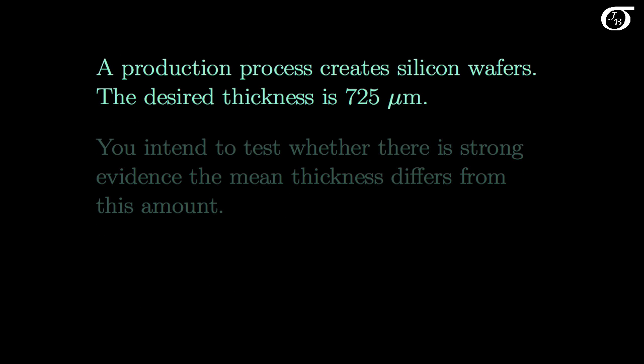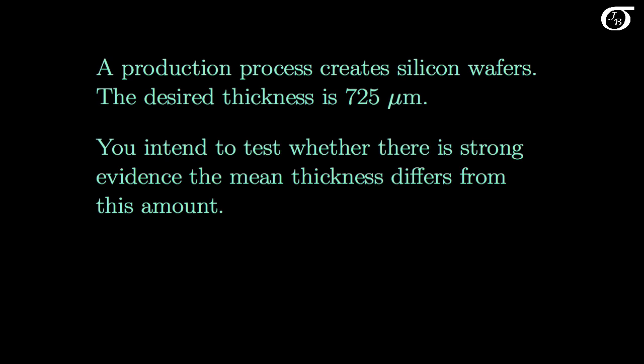A production process creates silicon wafers. The desired thickness is 725 micrometers. You intend to test whether there is strong evidence the mean thickness differs from this amount. We'll give the process the benefit of the doubt and test the null hypothesis that the true mean thickness is in fact 725 micrometers.